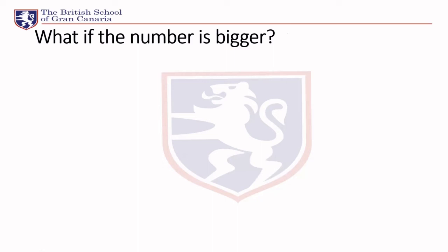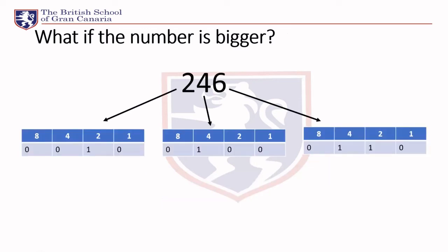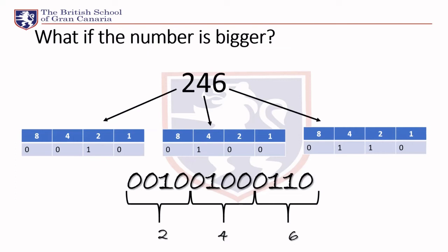What if the number is bigger? Hopefully you can already work this out. Take 246 — split it into three separate digits and do the same thing. So the BCD representation of 246 is simply the binary for 2, the binary for 4, and the binary for 6. We just break the number into separate digits and then break each one down to four bits.